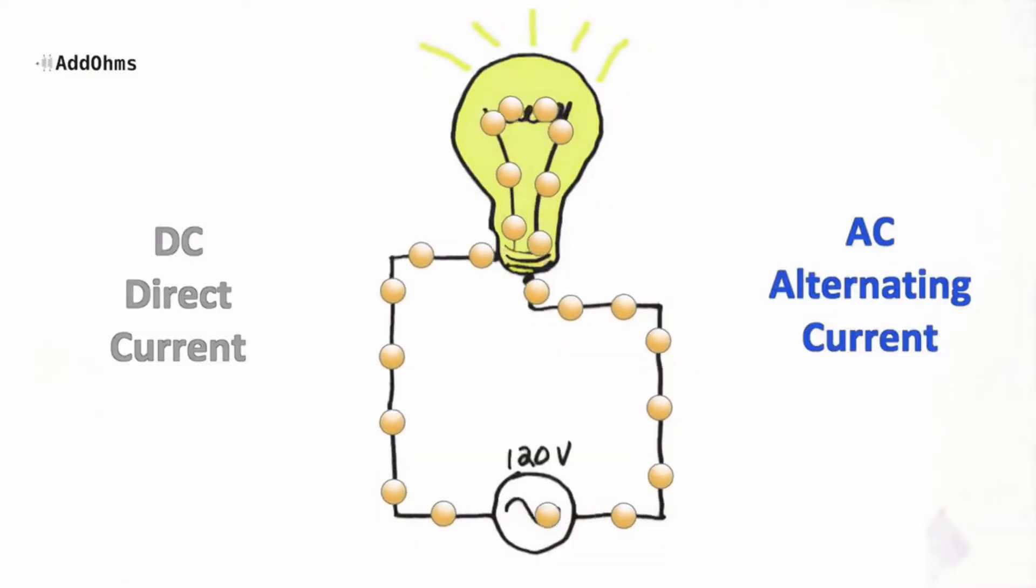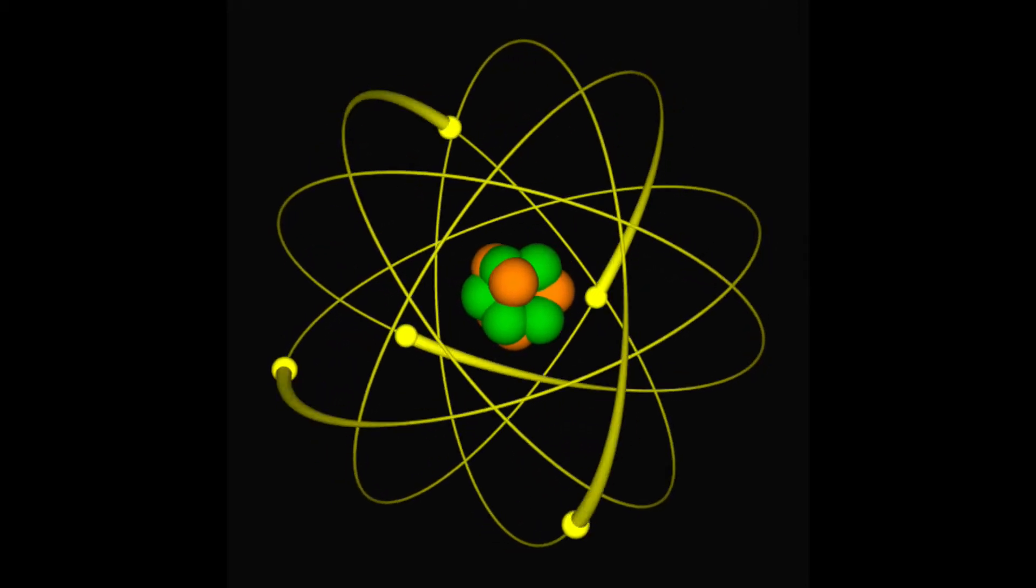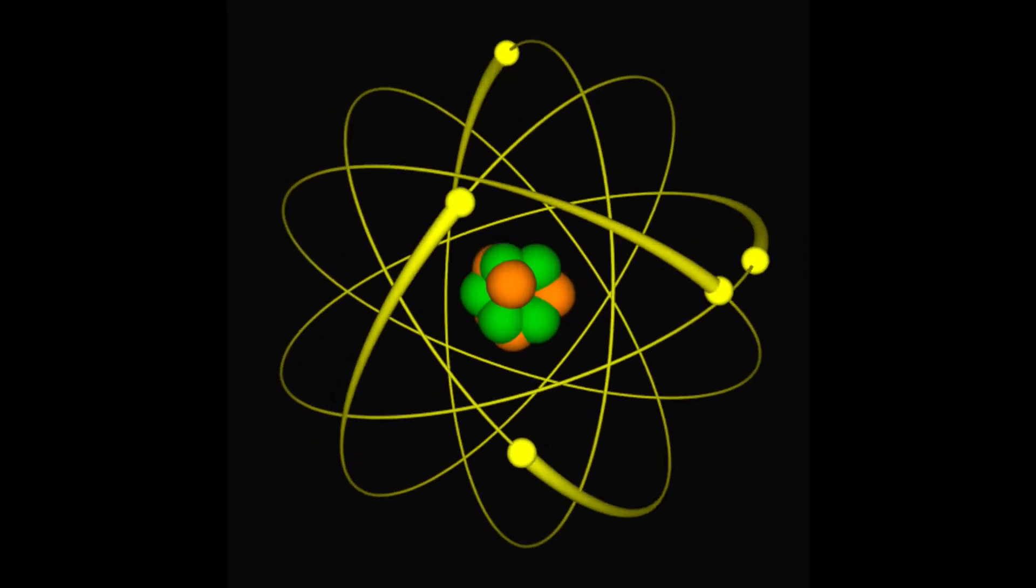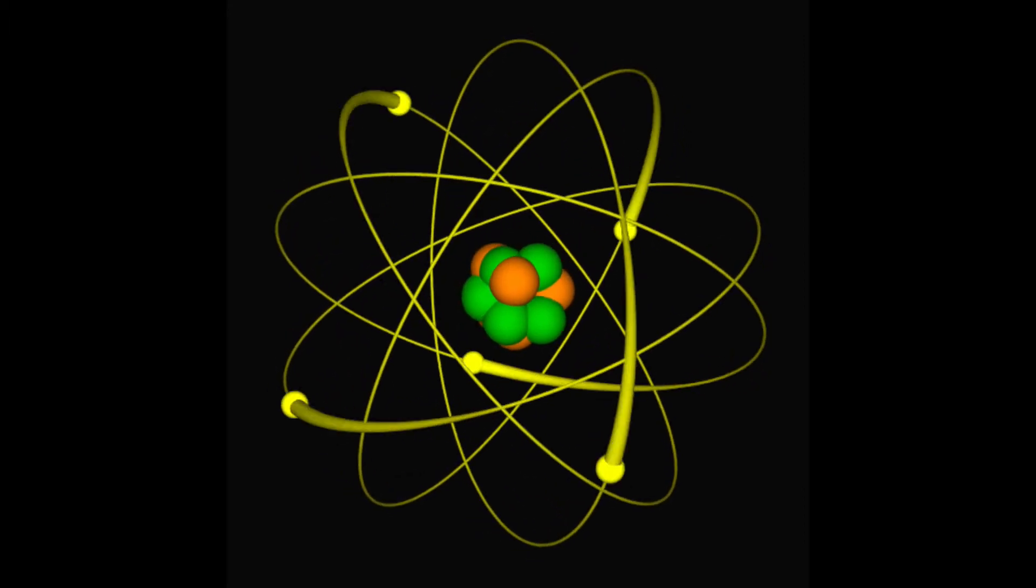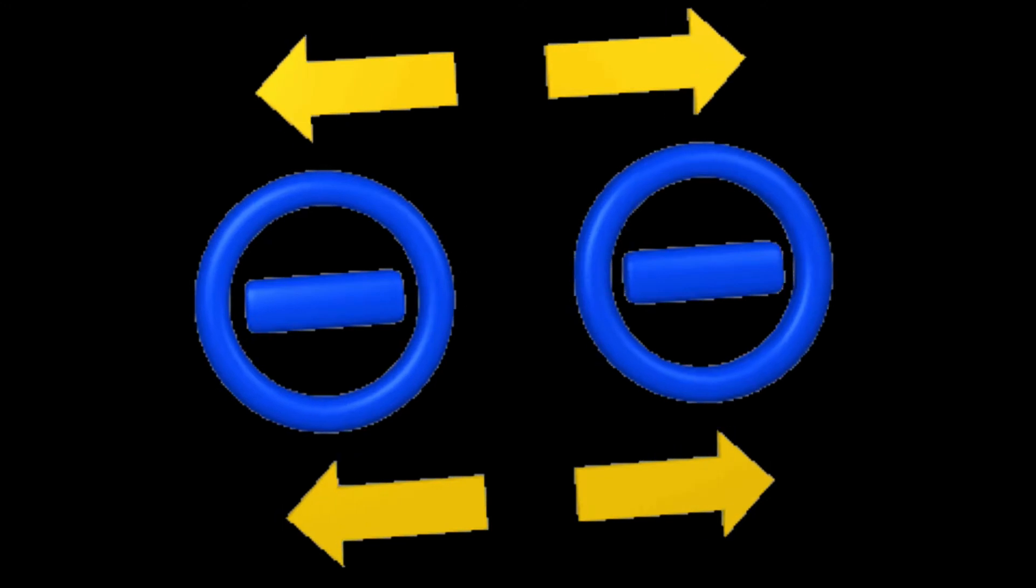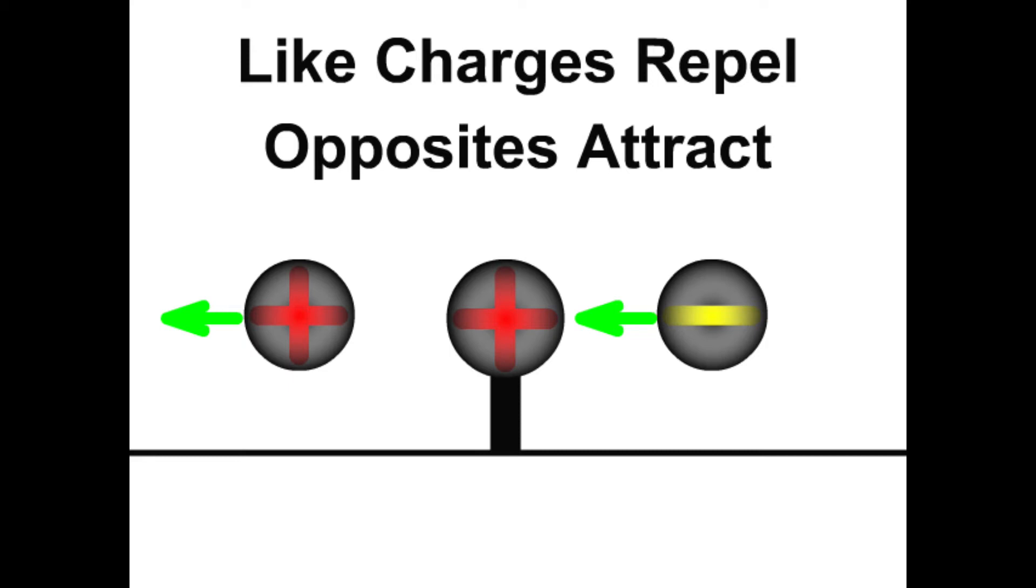Let's begin our exploration with a brief look inside an atom. Here, we see electrons whizzing around the nucleus. These electrons are the stars behind electricity. What you need to remember about them is that they have a negative charge, which means that each electron will repel other electrons and be attracted to things with a positive charge.